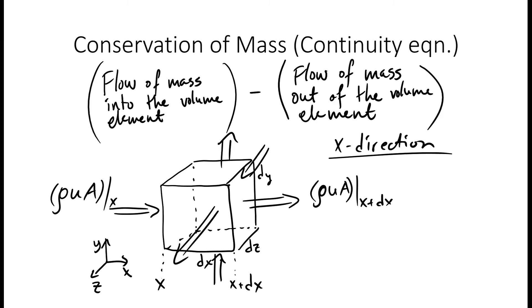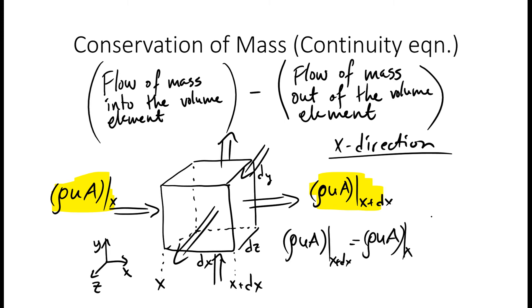We make an assumption on how this varies — we approximate the value on the right-hand side using a first-order Taylor expansion, using the value at the left-hand side of the volume element and the derivative of that value. So rho·u·A at x plus dx equals rho·u·A at x plus the partial derivative of rho·u·A at x over partial x, times dx. We can do this similarly for the y and z directions.